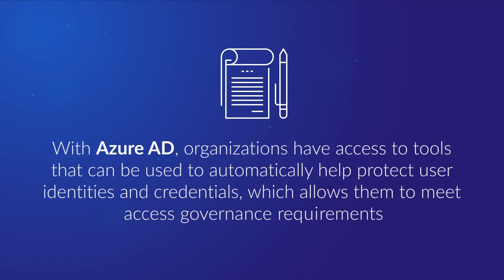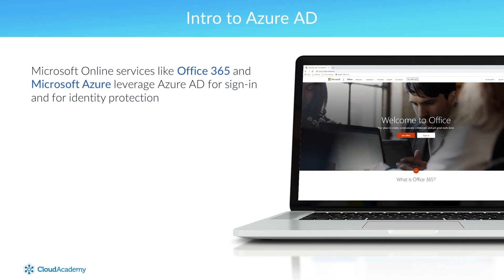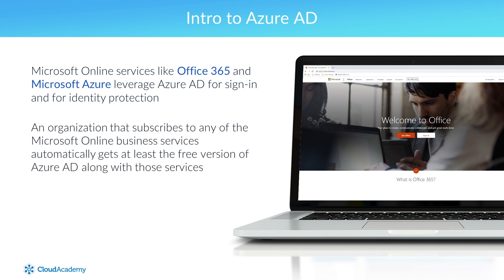With Azure AD, organizations have access to tools that can be used to automatically help protect user identities and credentials, which allows them to meet access governance requirements. Microsoft Online services like Office 365 and Microsoft Azure leverage Azure AD for sign-in and for identity protection. An organization that subscribes to any of the Microsoft Online business services automatically gets at least the free version of Azure AD along with those services.